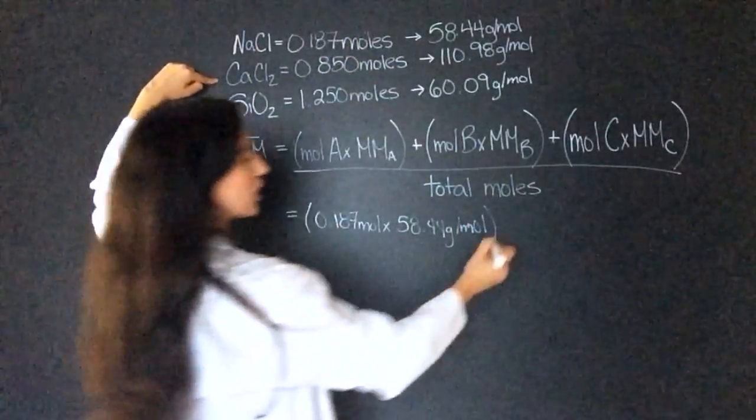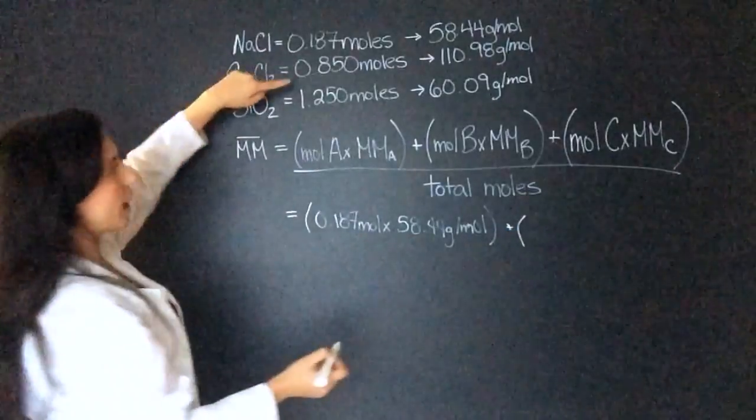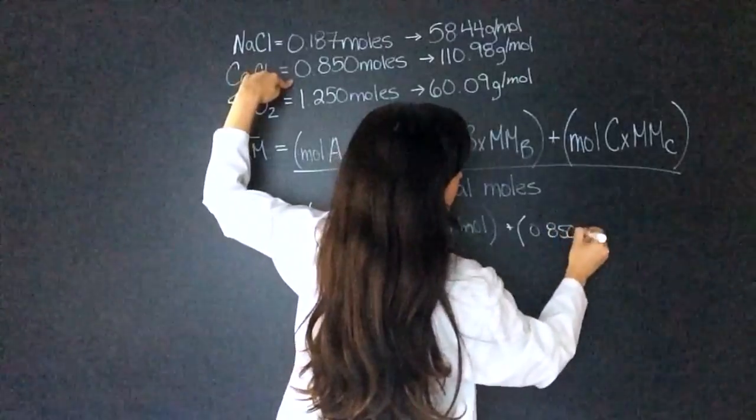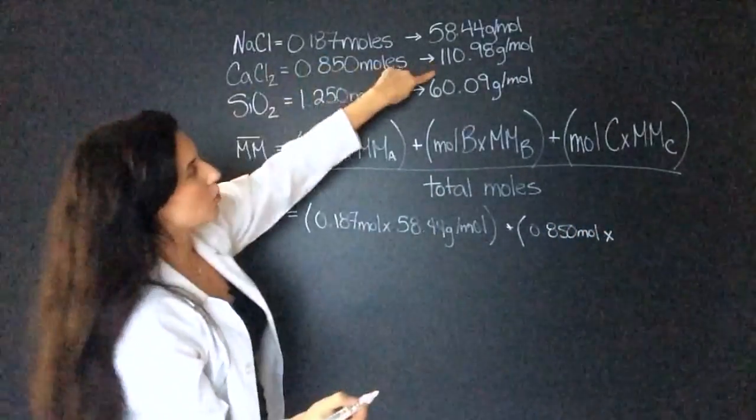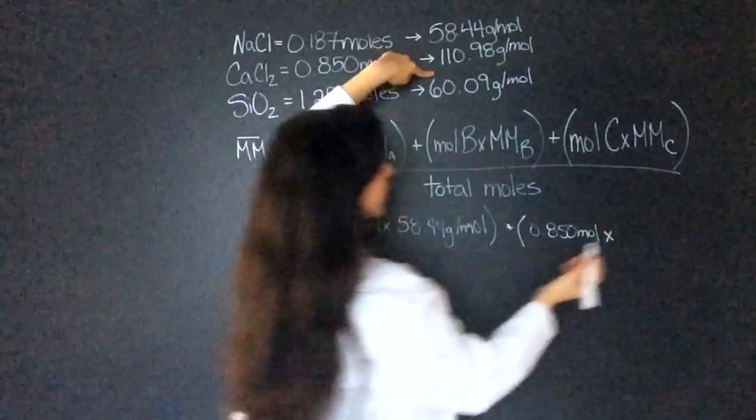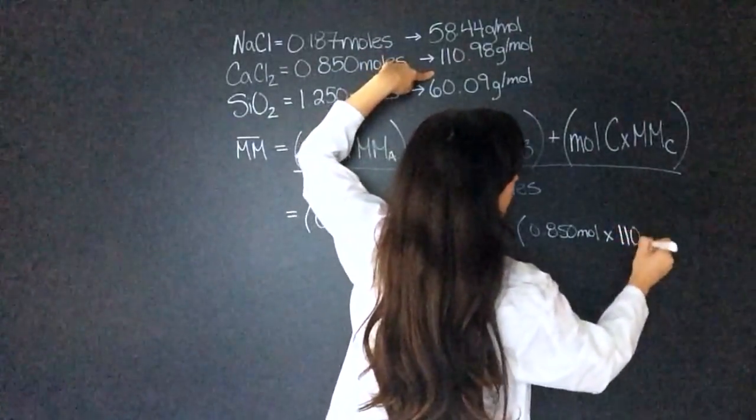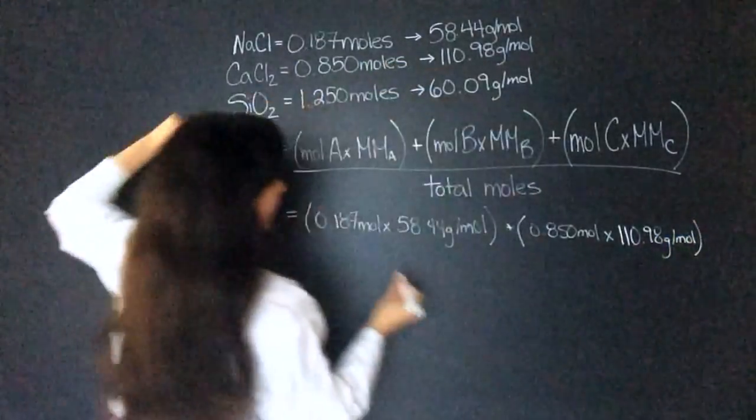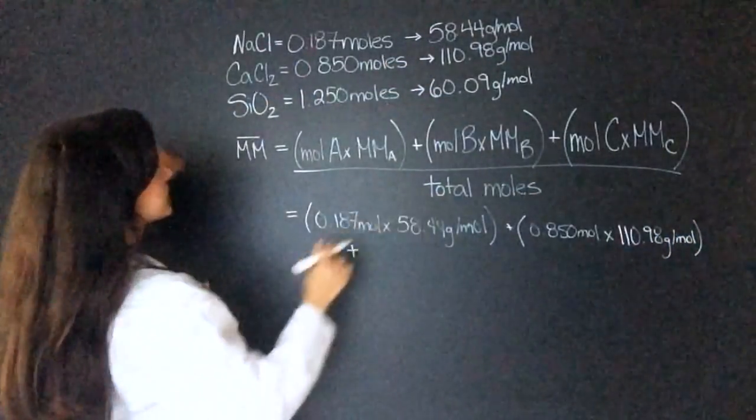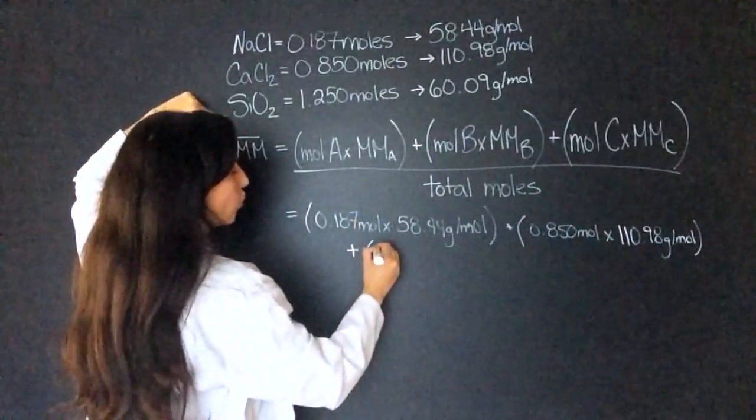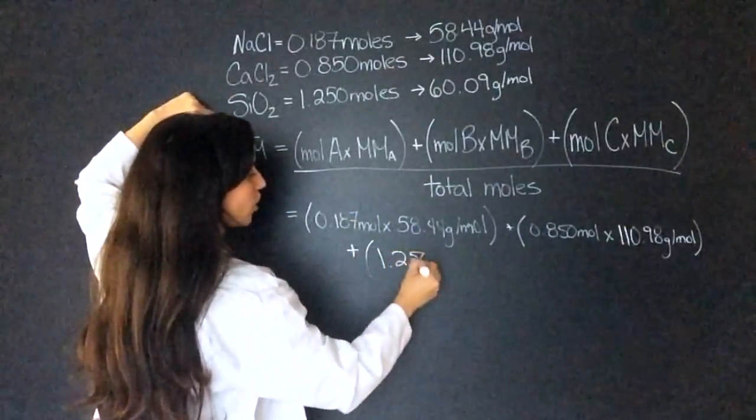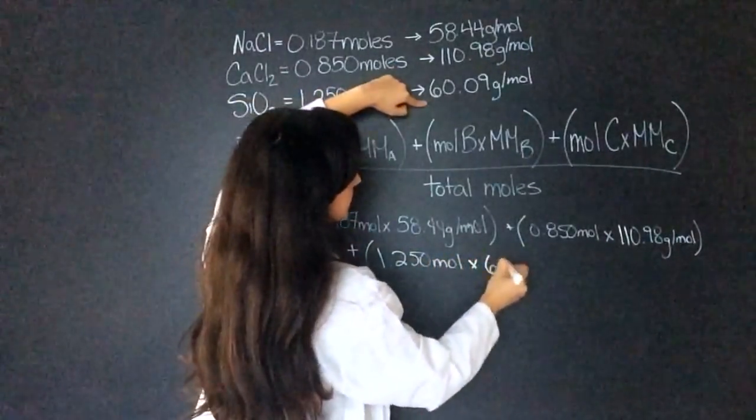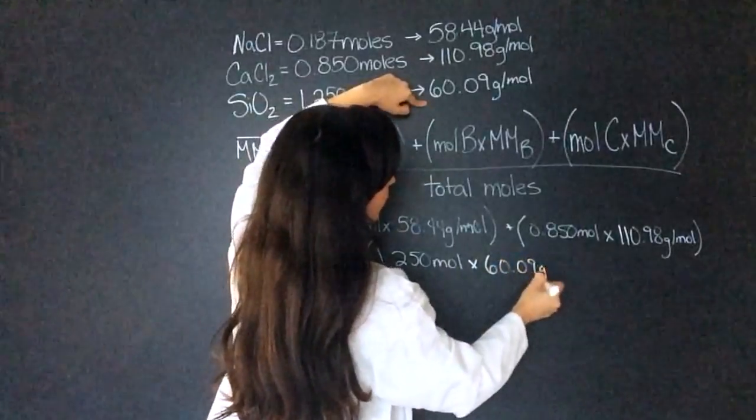We have 0.850 times the molar mass, 110.98. And then we add C, which is silicon dioxide. 1.250 mole times 60.09 grams per mole.